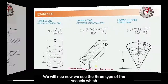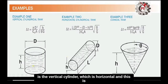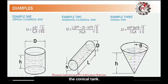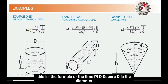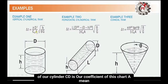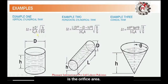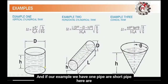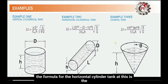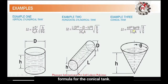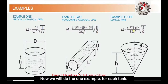We will now see three types of vessels: the vertical cylinder, the horizontal cylinder, and the conical tank. The formula for the vertical cylinder involves pi, D squared (the diameter), CD (the discharge coefficient), A (the orifice area), the height H, and G. Similarly, there is a corresponding formula for the horizontal cylinder tank and the conical tank.